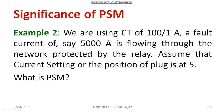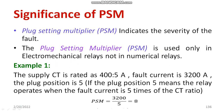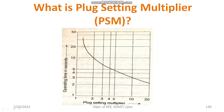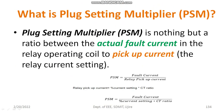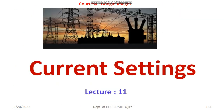In this session, I have discussed the importance of current setting. There are two types of settings: one is plug setting, and the other is plug setting multiplier. The plug setting multiplier indicates the severity of the fault current. Hope you understood the session. Thank you for watching this video.